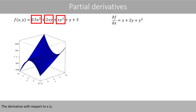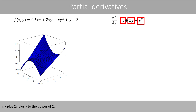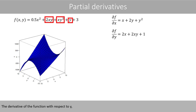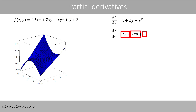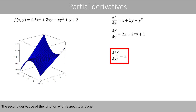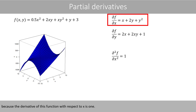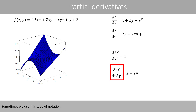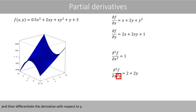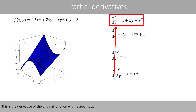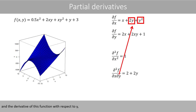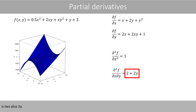Let's take another example. The derivative of this function with respect to x is x plus 2y plus y to the power of 2. The derivative of the function with respect to y is 2x plus 2x times y plus 1. The second derivative of the function with respect to x is 1. Sometimes we use this type of notation, which means that we first differentiate the function with respect to x and then differentiate the derivative with respect to y. This is the derivative of the original function with respect to x, and the derivative of this function with respect to y is 2 plus 2y.